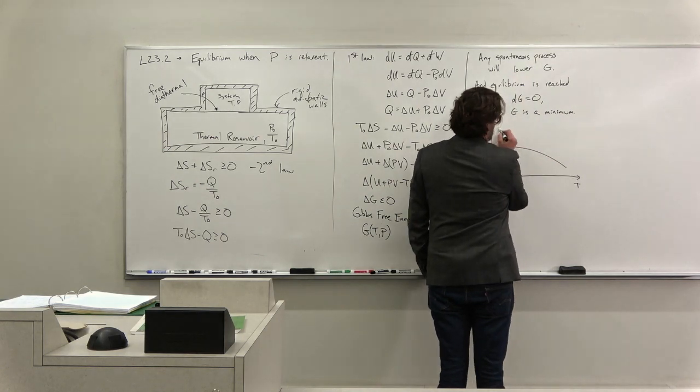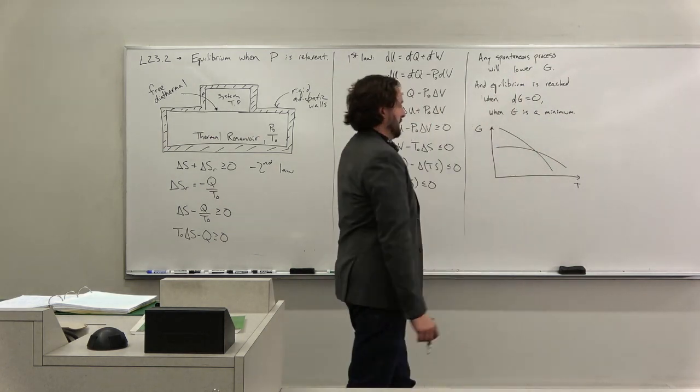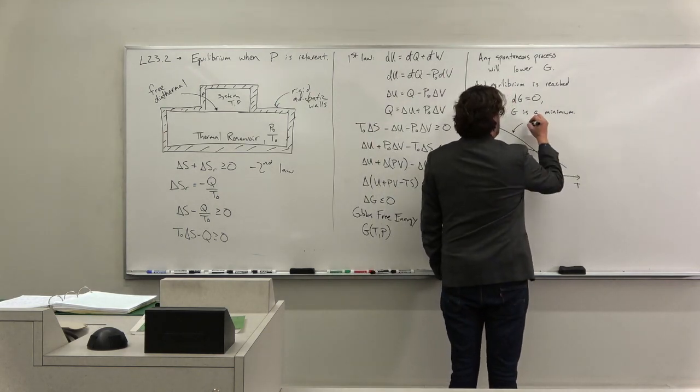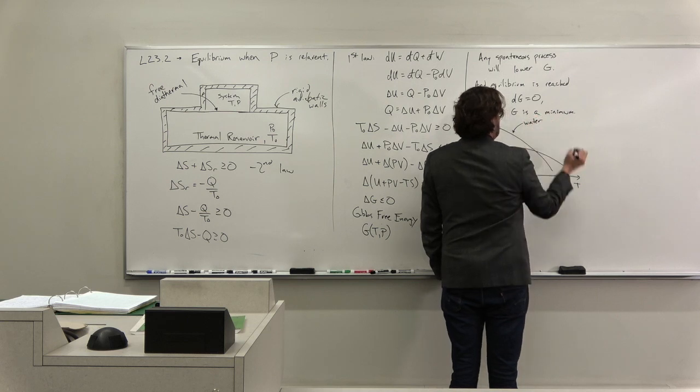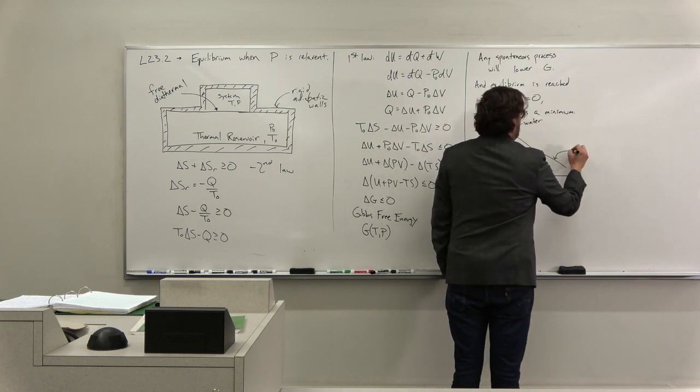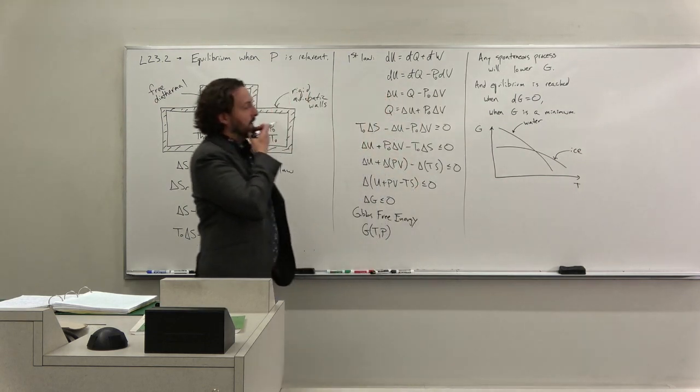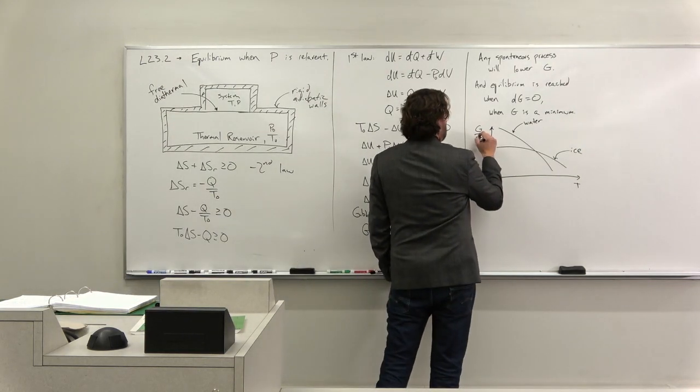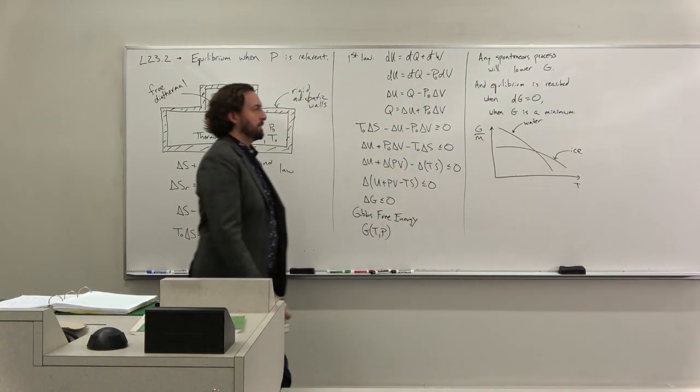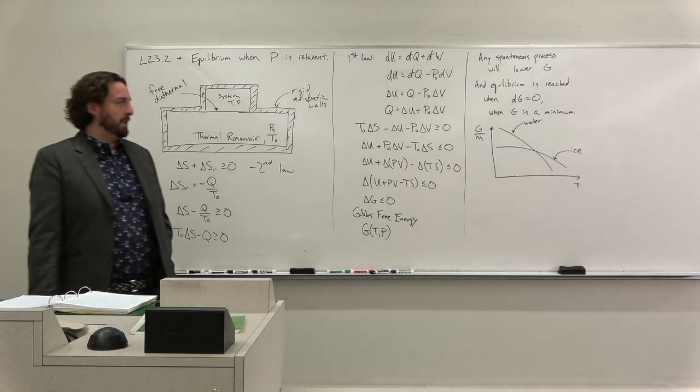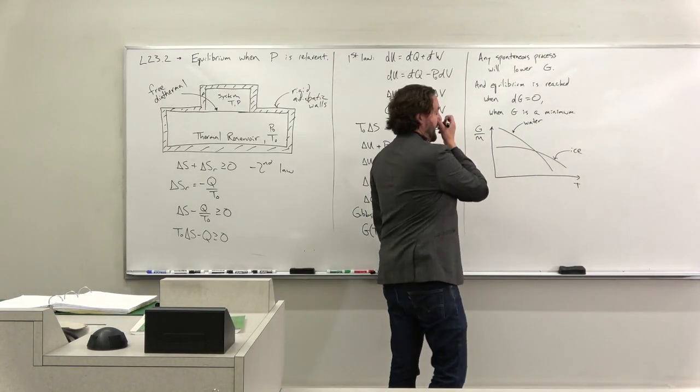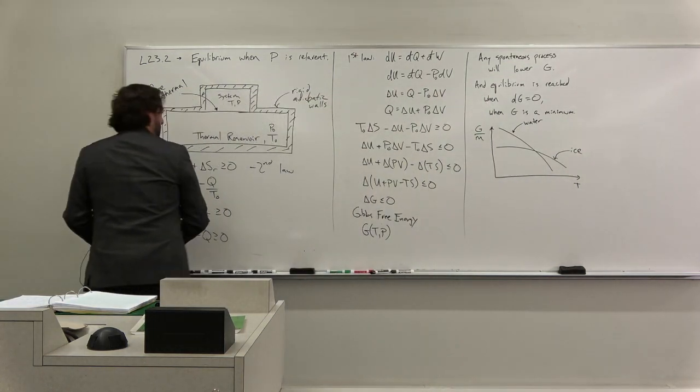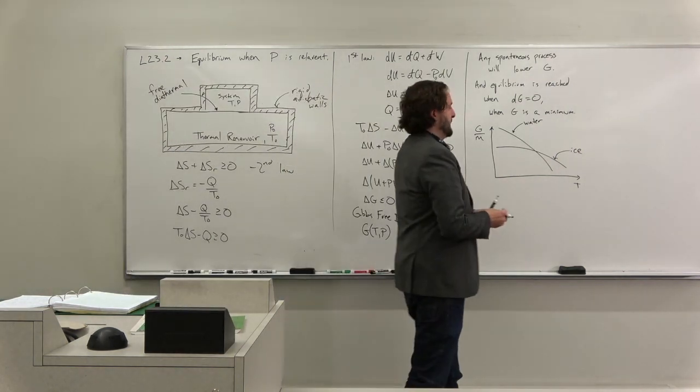So what happens is that I get two curves. So this might be the curve for water, and this might be the curve for ice. So for some reason, whatever the internal process is, actually let's write G over M. I just want to make it intrinsic at the moment.